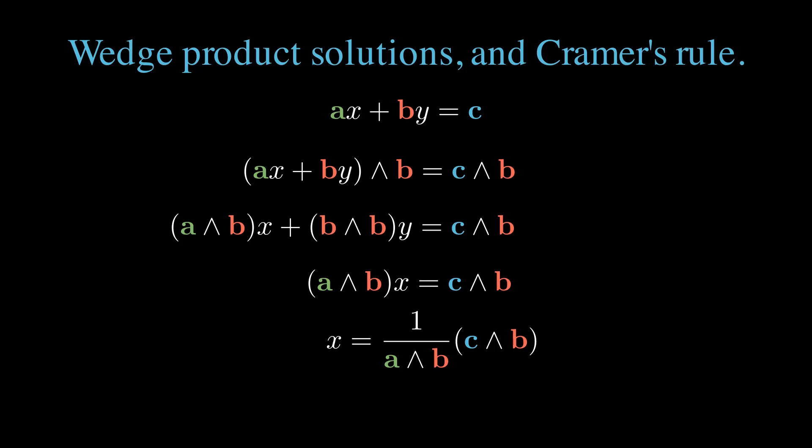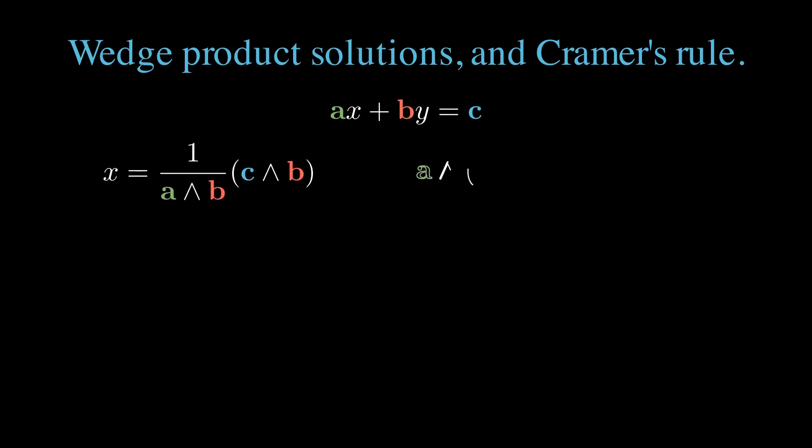If we want to solve for y, we simply have to wedge with a. Let's wedge the whole equation on both sides with a from the left. After distribution, we have a wedge a times x plus a wedge b times y equals a wedge c. But a wedge a is zero.